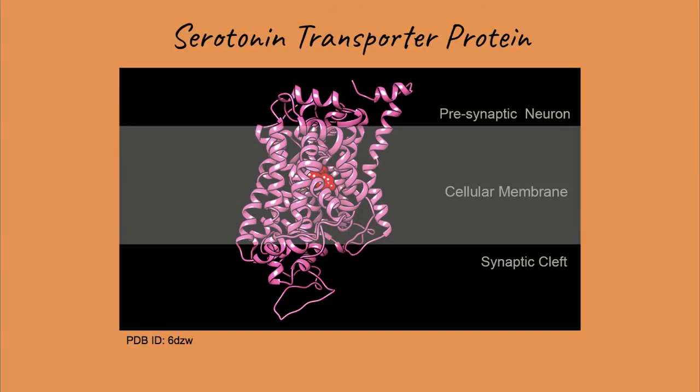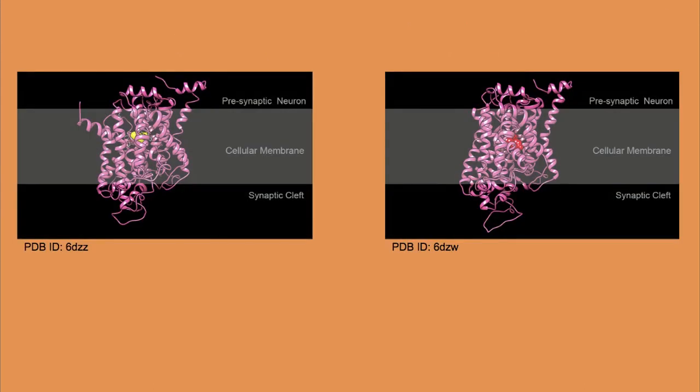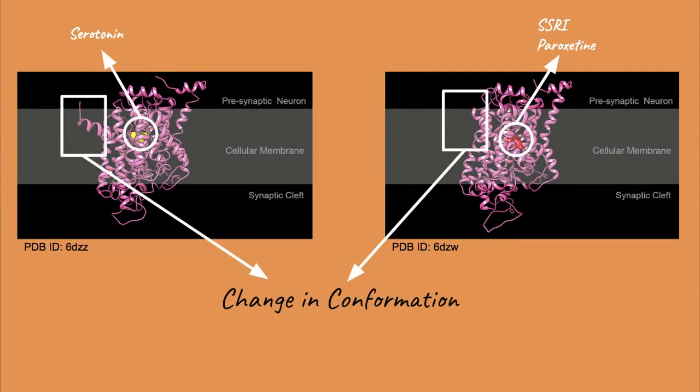First, SSRIs bind to an allosteric site on the serotonin transporter. This causes a change in conformation, inactivating the transporter and blocking the tunnel where serotonin is reabsorbed.